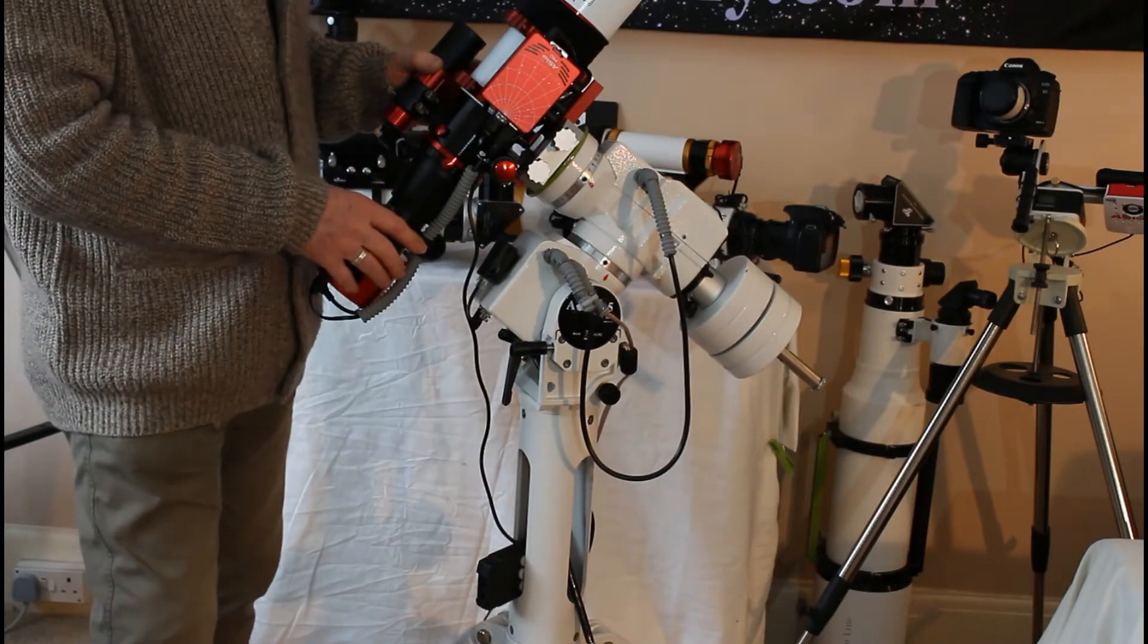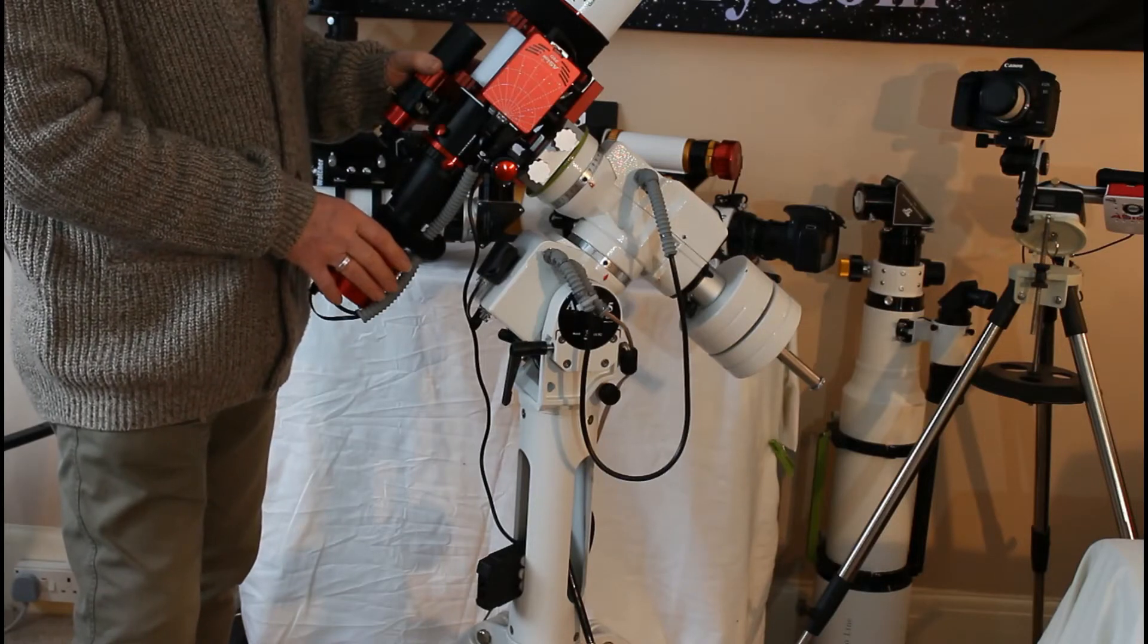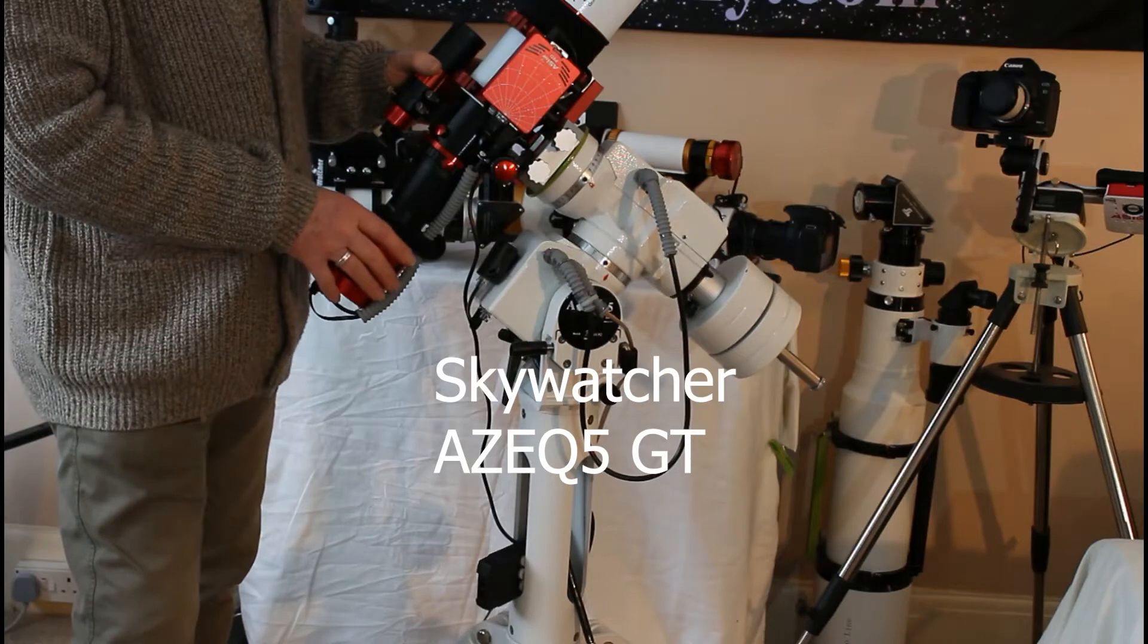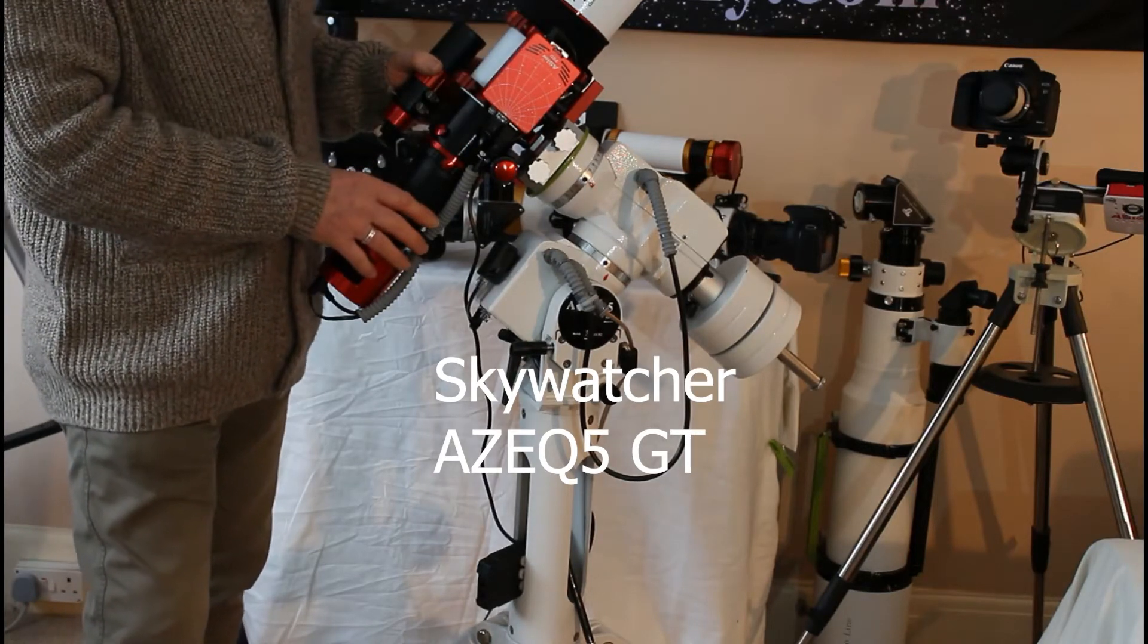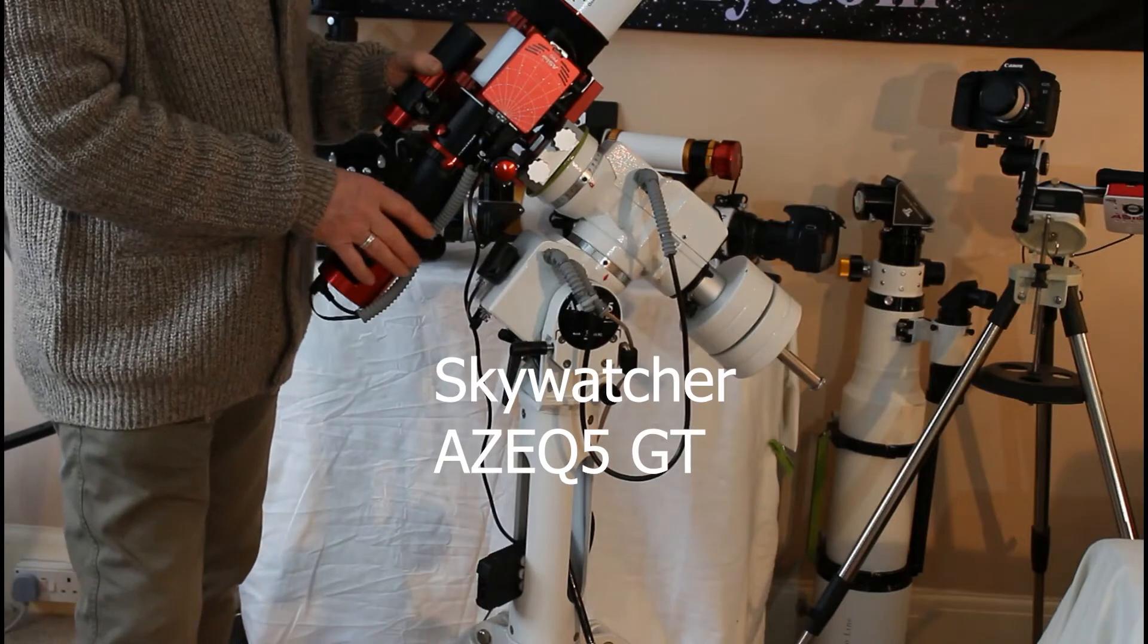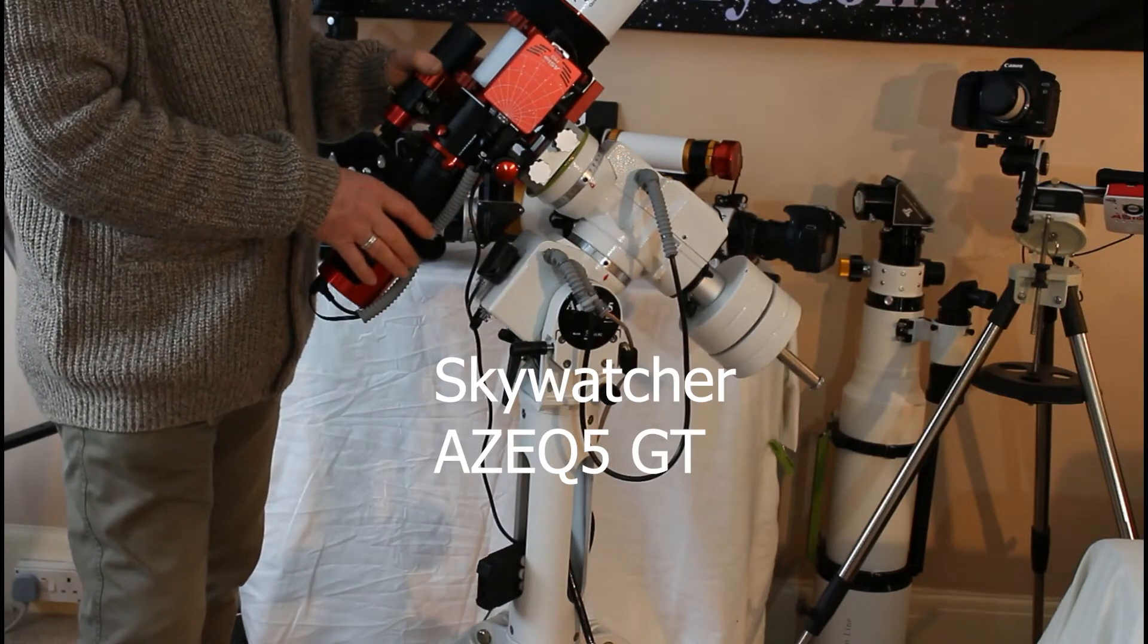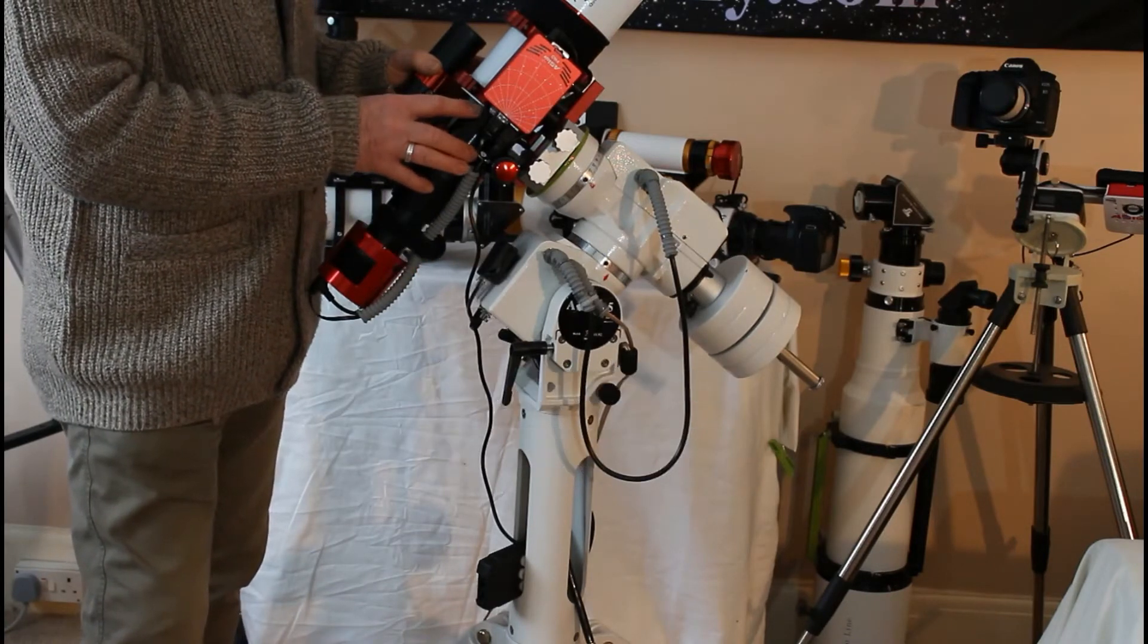Mount being used here is a Skywatcher AZ-EQ5GT. It has a payload of about 15 kilograms, which is more than enough for this. This whole rig weighs around about seven or eight kilograms, and as a rough guide you should be looking at using half the maximum payload of the mount for carrying a rig for astrophotography uses.